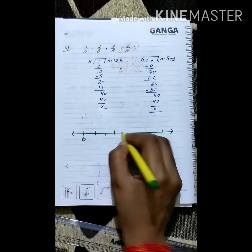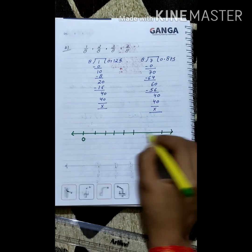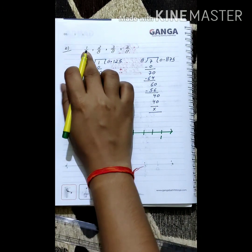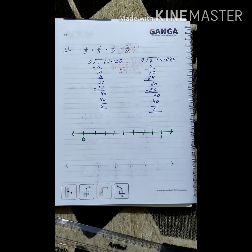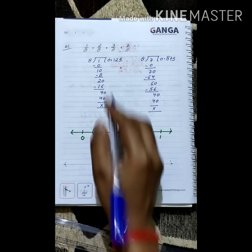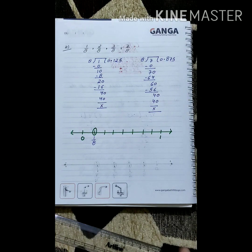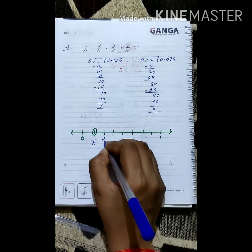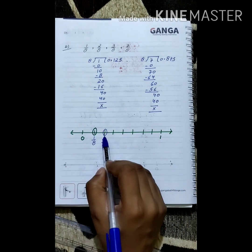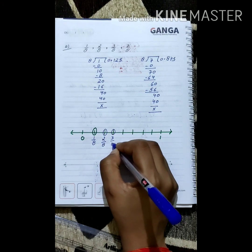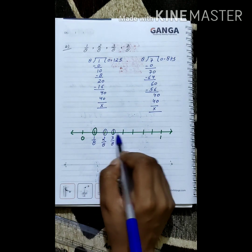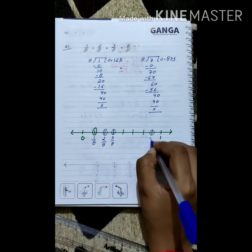Now we plot the numbers according to the numerator. For 1 by 8, move 1 step to the right of 0. For 2 by 8, move 2 steps to the right of 0. For 3 by 8, move 3 steps to the right of 0. For 7 by 8, move 7 steps to the right of 0 — counting 1, 2, 3, 4, 5, 6, 7 — and mark it as 7 by 8.